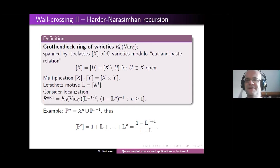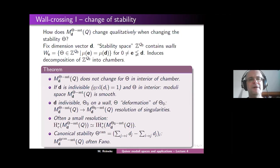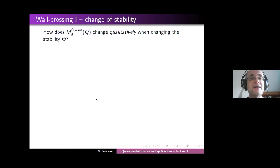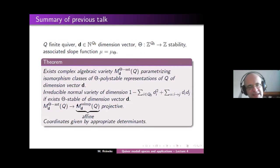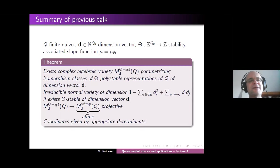Jens asks: in the associated map from the semi-stable to the semi-simple moduli space, what kind of semi-simple representation do you associate? Geometrically, this map comes from the fact that we define the moduli space as the proj of a ring of semi-invariants and as the spec of a ring of invariants. Representation-theoretically, it means: take a semi-stable representation V, take its associated graded with respect to any Jordan-Hölder filtration, and that's it.